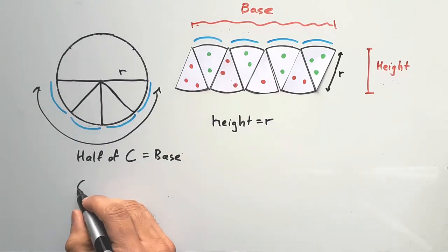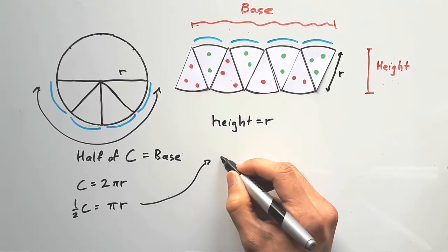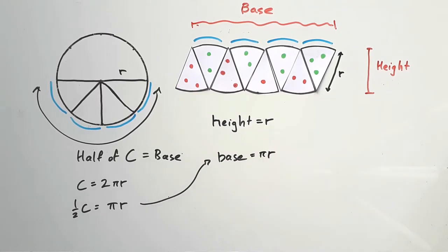In general, our circumference is 2πr, so half of that is just πr, meaning the base is πr.